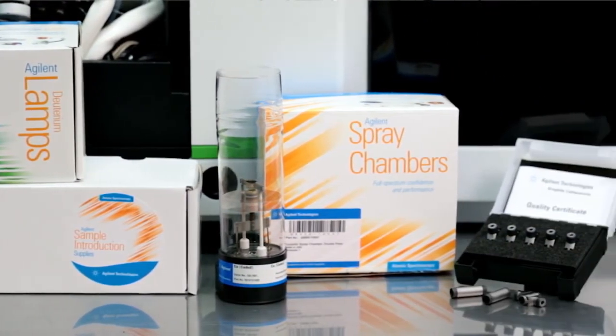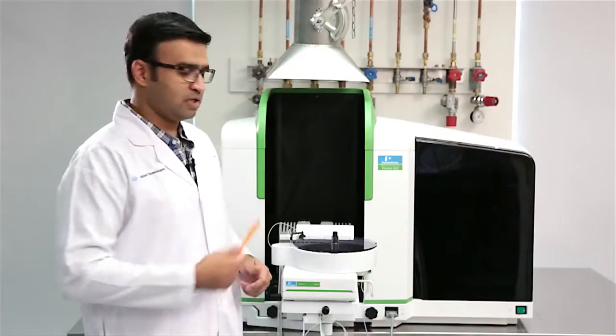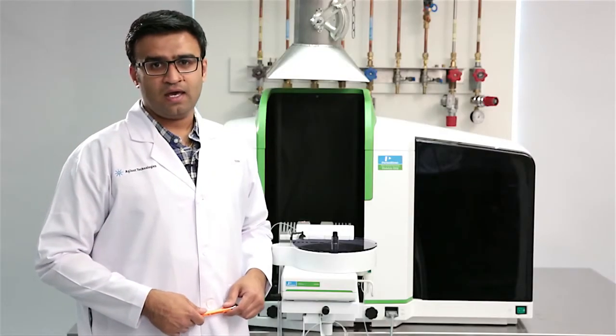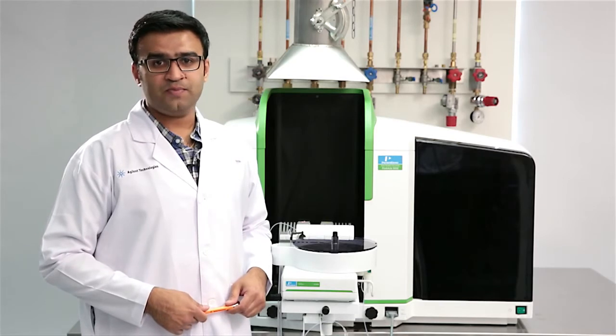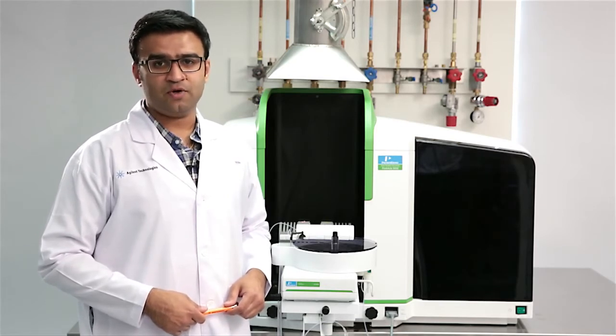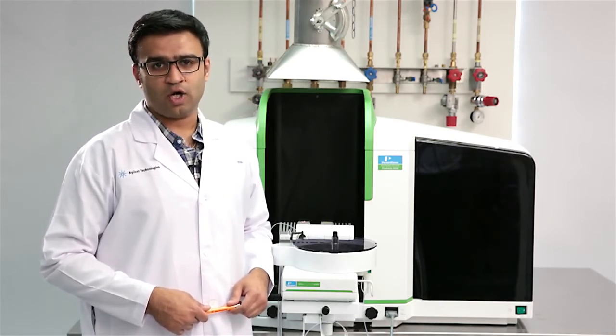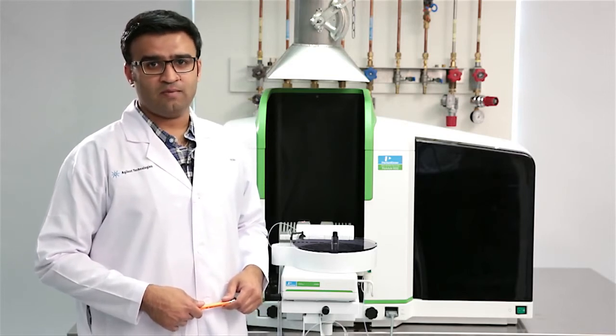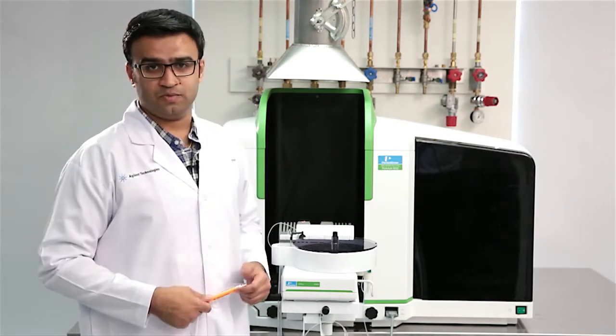ICP-OES and atomic absorption systems like the Pinnacle 900Z. This is an instructional video to help you achieve the best performance and productivity for your Perkin Elmer atomic absorption systems, and I'm going to start off by showing you how to replace the graphite tubes.